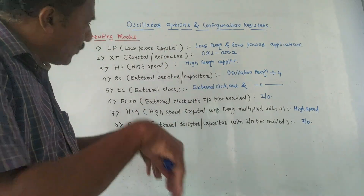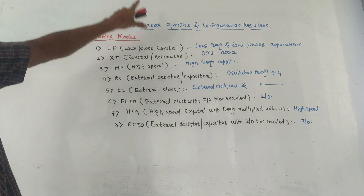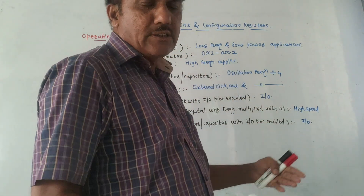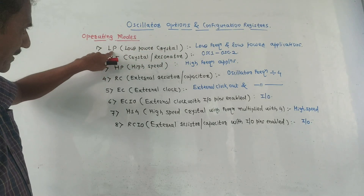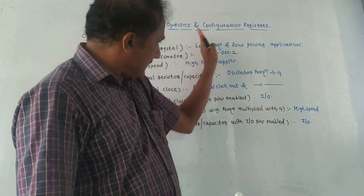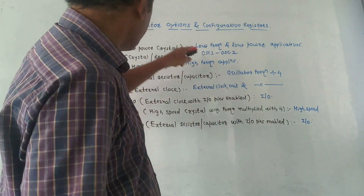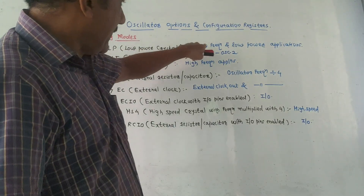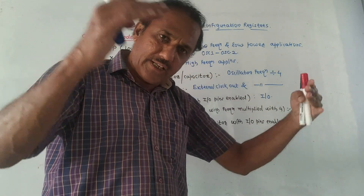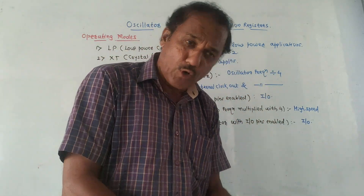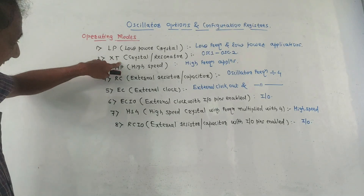There are eight major operating modes applicable for a generalized PIC microcontroller. The first mode is LP — low power crystal oscillator mode. LP means low power. As the name indicates, it is applicable for low frequency and low power consumption. Whenever applications are related to lower frequency and lower power, LP mode of oscillation is preferred. Next is XT, which stands for crystal or resonator.